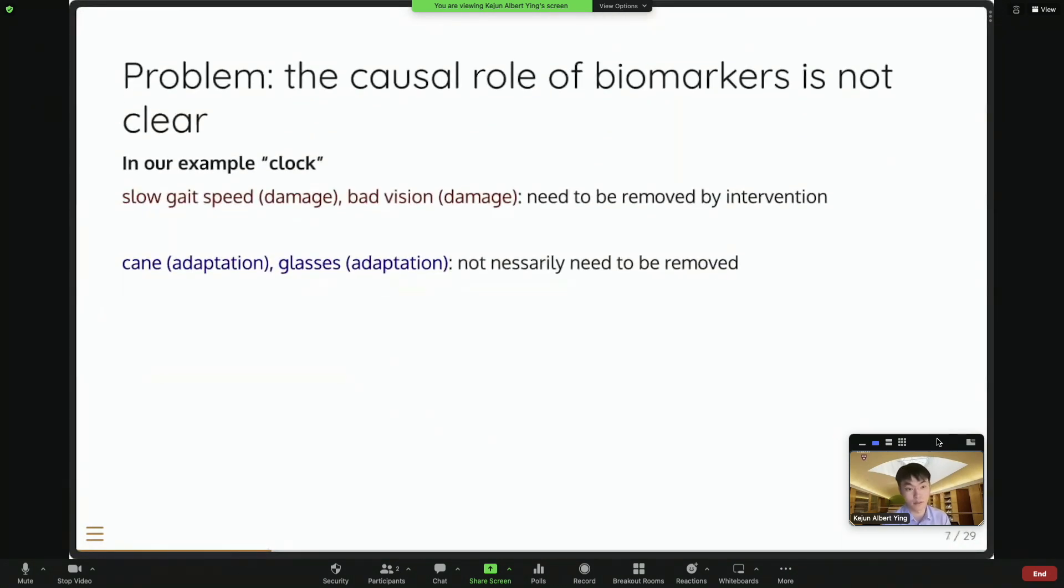So of course not. So it's very clear here, because we use a very straightforward example. So in our clock, the slow gait speed and bad vision are damage. So this kind of feature would want to reverse or remove by our anti-aging intervention. But the cane and glasses usage are adaptation or adaptive. They act against the damage and they are protecting our body. So they're not necessarily to be removed, at least not primarily.